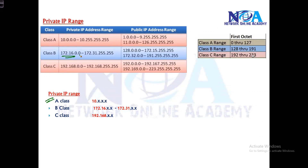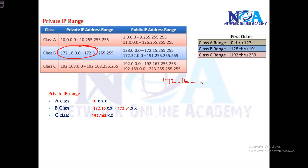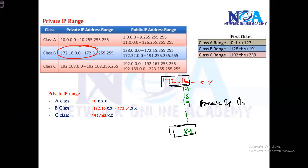In Class B, there are approximately 16,000 subnets in the range 128 to 191. Out of those, only 16 subnets are private: from 172.16 up to 172.31. So any address in the range 172.16 to 172.31 is your private IP range in Class B. All remaining addresses — such as 128, 129, up to 172.15, and from 172.32 to 191 — are public. Just remember: 172.16 to 172.31 is private.